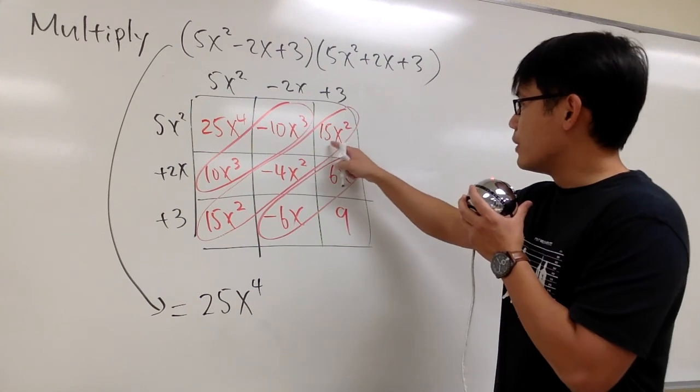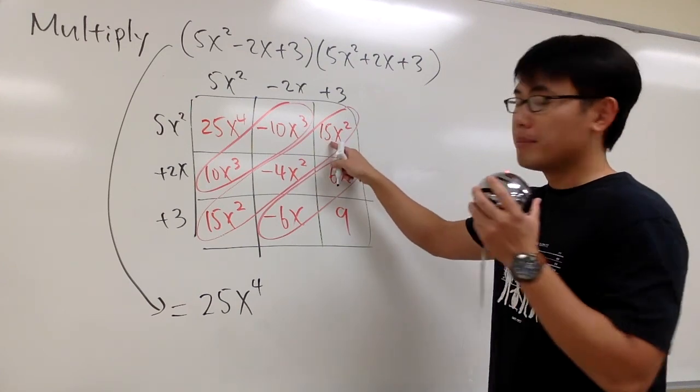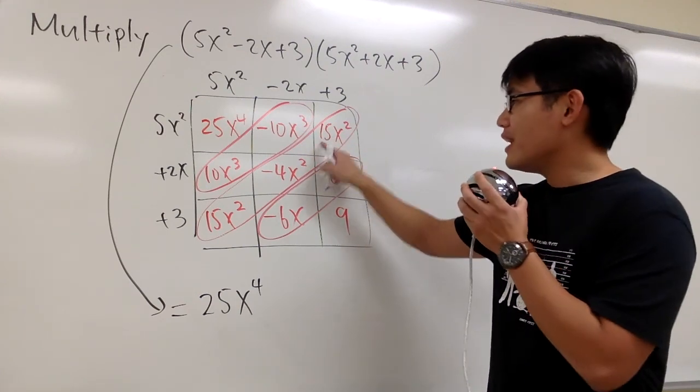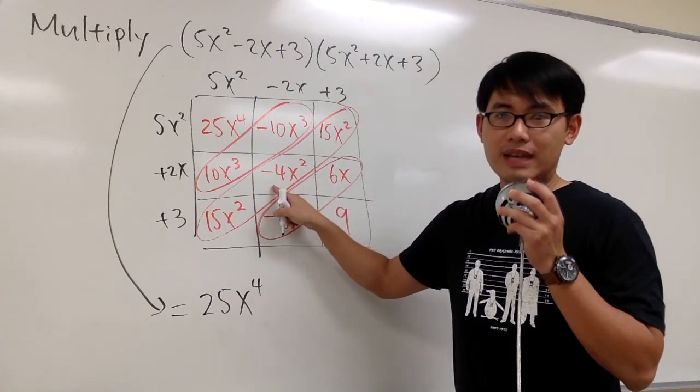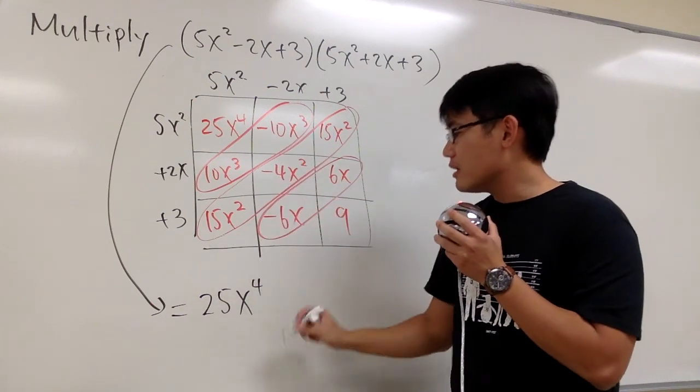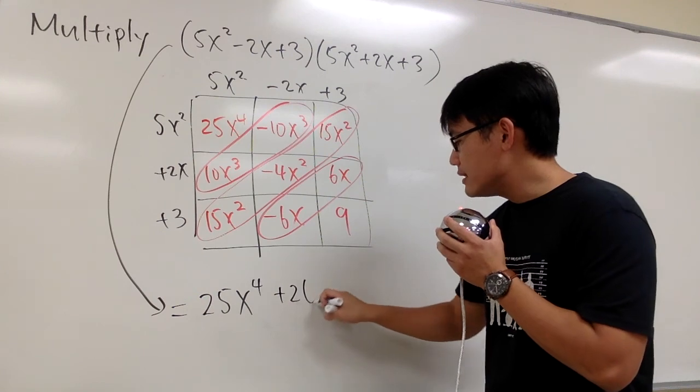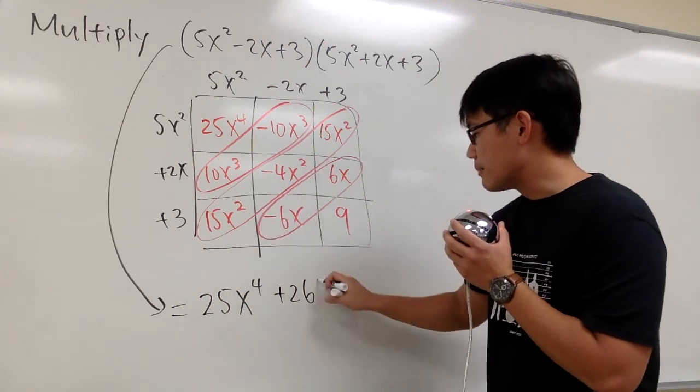For the x to the second power term, we have 15. And let's just combine the numbers in front. So 15 minus 4 is 11. 11 plus 15. That will give us plus 26x².